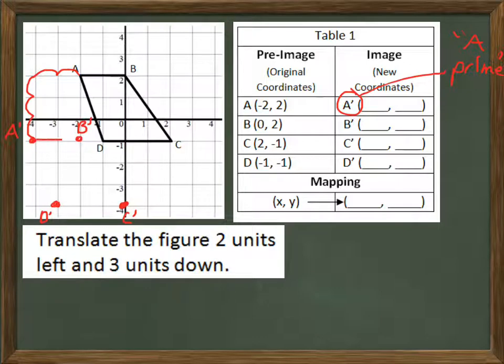And I'll go ahead and connect the dots to form the new figure. We just slid that trapezoid to a new location. And the new trapezoid is called A prime, B prime, C prime, D prime.